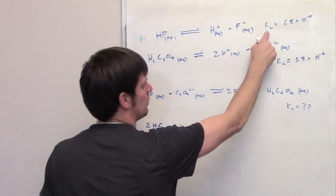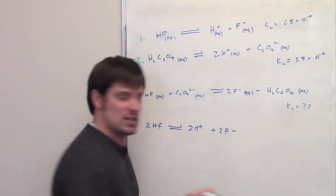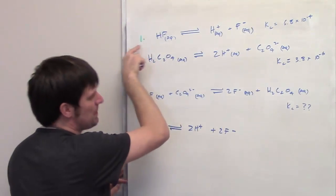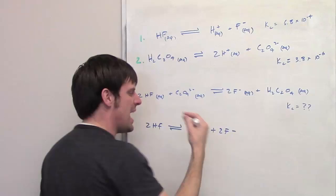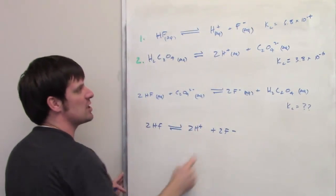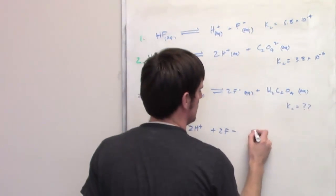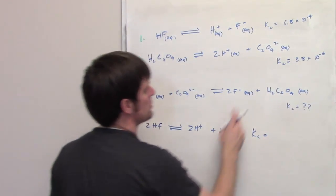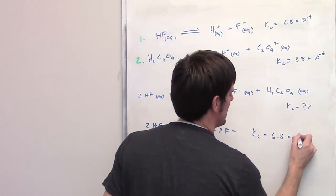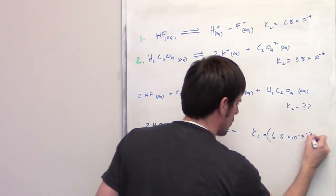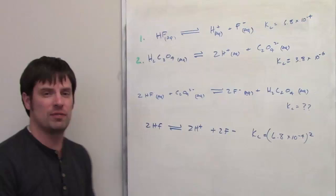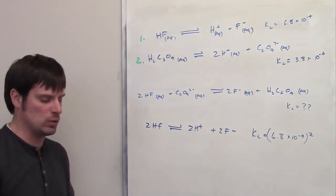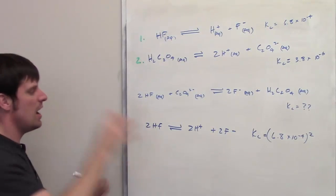What does that do to the equilibrium constant expression? Well as I explained earlier in our earlier video, when you multiply something through an entire chemical equation, that multiplier, in this case 2, ends up becoming an exponent in the new equilibrium constant expression. So Kc becomes 6.8 times 10 to the negative fourth squared. Hopefully you're okay with that because I multiplied everything by 2. That's what you have to do for the equilibrium constant expression of the new equation.